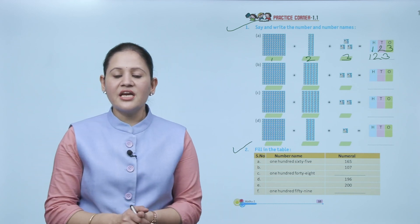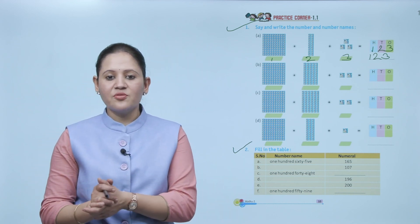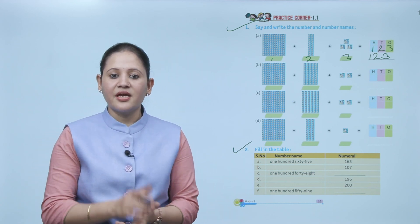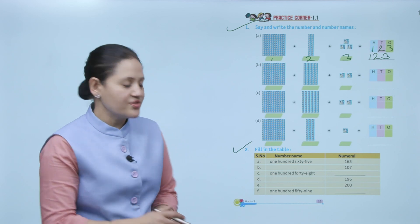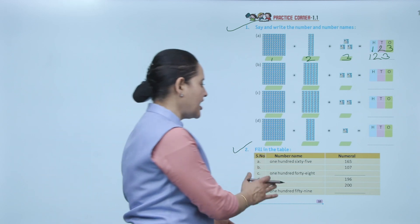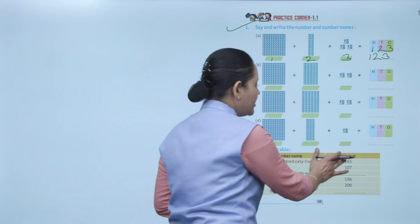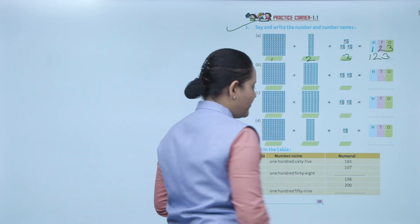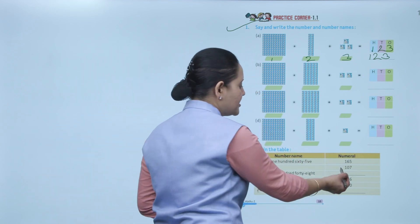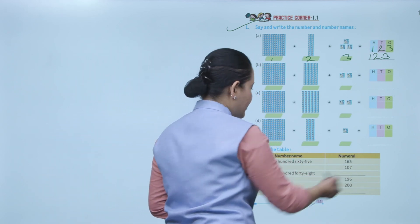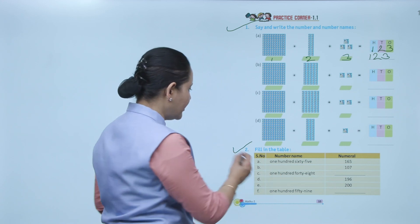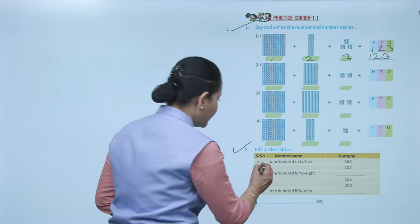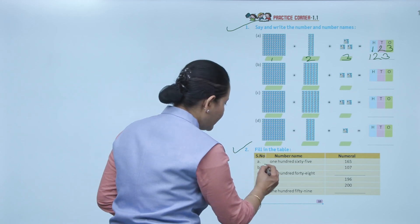Next: fill in the table. The number name is given and we have to write the numerals — for example, 165, so the numeral is 165. Next, 107 is given so we will write the number name: one hundred seven.